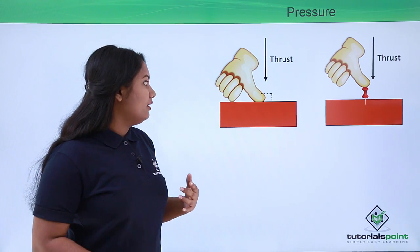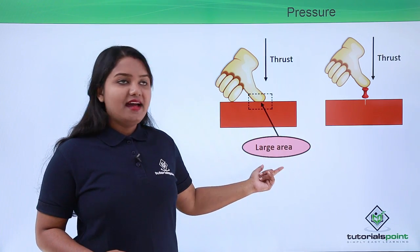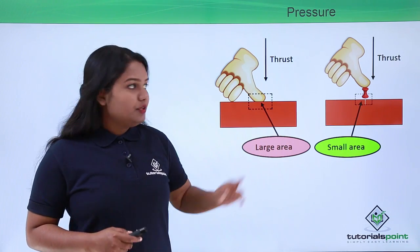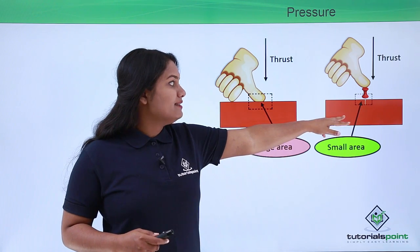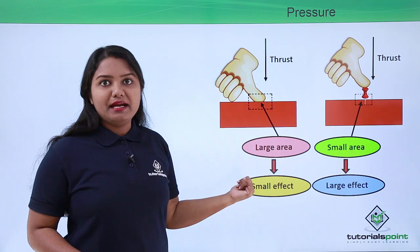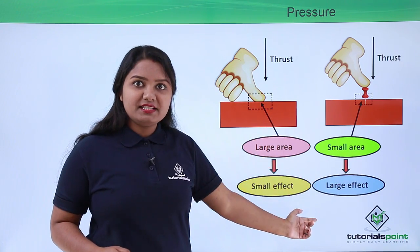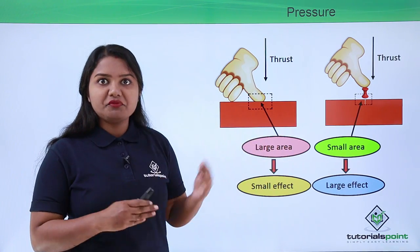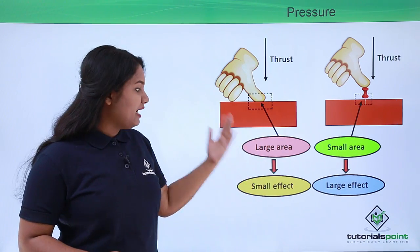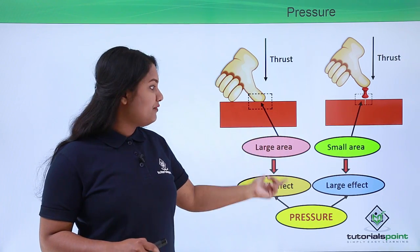The key difference between the two cases is the area of contact. In the first case, the area of contact between the thumb and the wooden block was large. In the second case, the area of contact of the pin with the wooden block was very small. Yet the effect was larger in the second case. This difference in effect, despite using the same thrust, is due to pressure — the pressure in both cases is different.